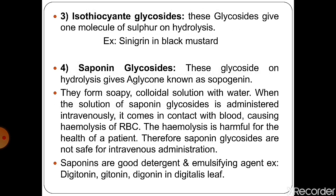The fourth category is saponin glycosides. These glycosides on hydrolysis give an aglycone known as sapogenin. They form a soapy colloidal solution with water. When a solution of saponin glycosides is administered intravenously, it comes in contact with blood, causing hemolysis of RBCs. This hemolysis is harmful for the health of a patient. Therefore, saponin glycosides are not safe for intravenous administration. Saponins are good detergents and emulsifying agents. Examples include digitonin, gitonin and digonin in Digitalis species.